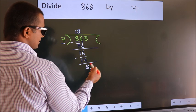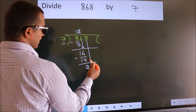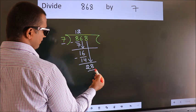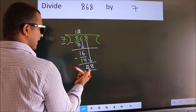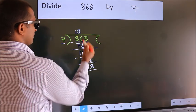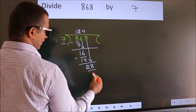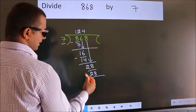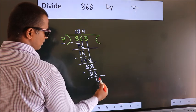After this, bring down the next number. So 8 down. So 28. When do we get 28? In the 7 table. 7 fours is 28. Now we subtract. We get 0.